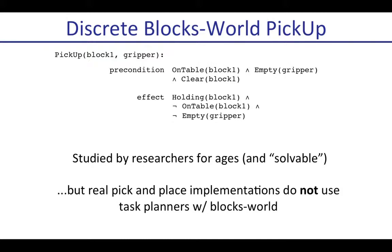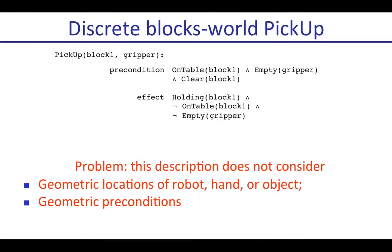This has been studied for ages and is largely considered solved, at least for the blocks world. But interestingly, if you look at the implementation of a real-world pick-and-place task in robotics, almost no approach actually uses a task planner to find a plan and then implement it. That's because this kind of description doesn't really consider the geometric locations of the robot, the hand, or the object, and the geometric preconditions of this kind of action.